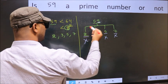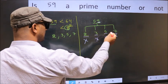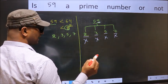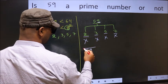So, 59 is not divisible by any of these numbers. Hence, 59 is a prime number.